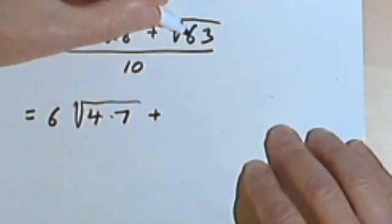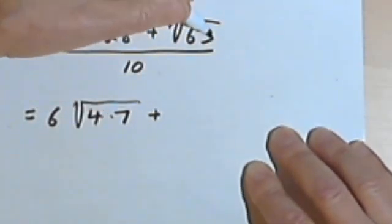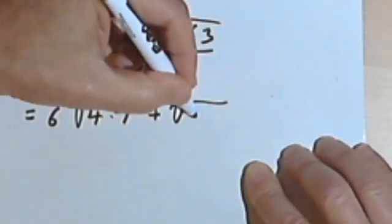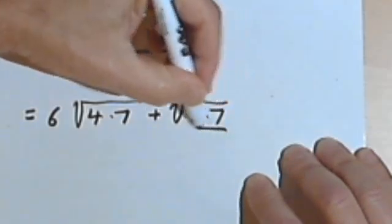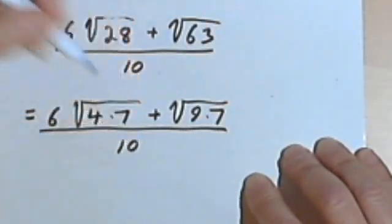And 63, I can divide a 9 into 63, so that will be the square root of 9 times 7, and that's all over 10.